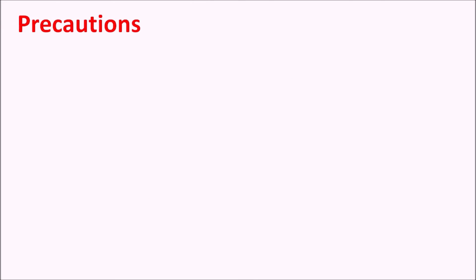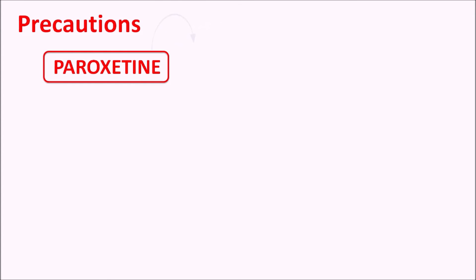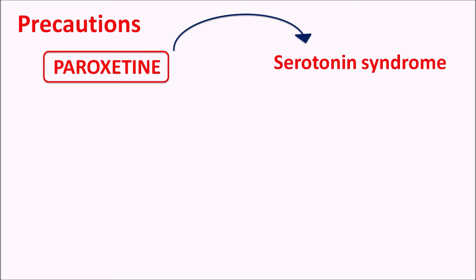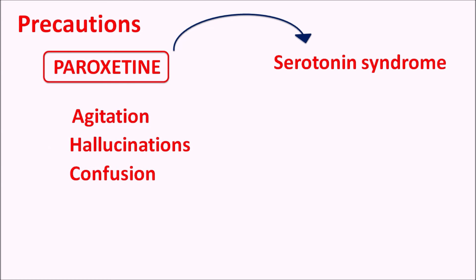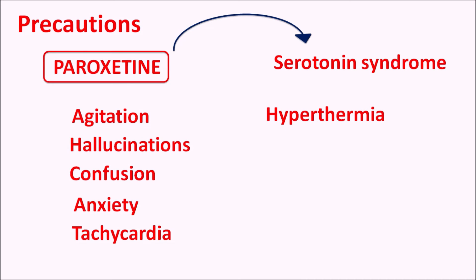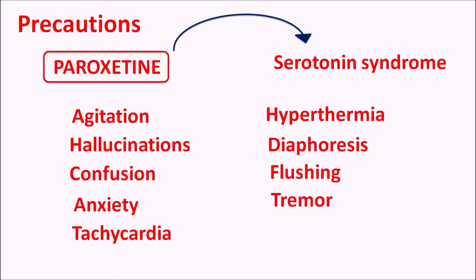One important precaution is that paroxetine can increase the risk of serotonin syndrome — a syndrome associated with excessive elevation of 5-HT levels — producing symptoms such as agitation, hallucinations, confusion, anxiety, tachycardia, hyperthermia, diaphoresis (sweating), flushing, tremor, and muscle rigidity. This serotonin syndrome is more pronounced when paroxetine is combined with other drugs such as TCAs and MAO inhibitors.